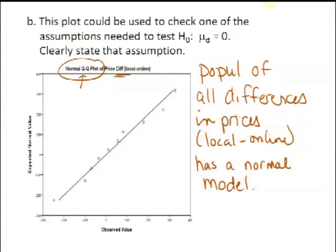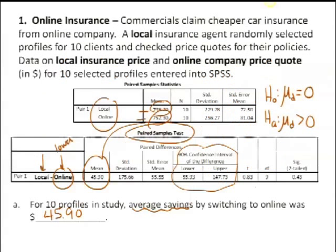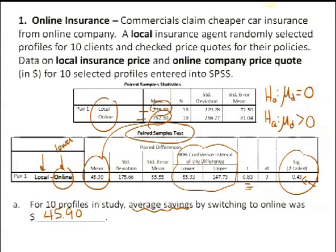You could pull off that t-statistic or do the test here. That p-value of 0.43 would have to be cut in half because we have a one-sided test with a positive t. It doesn't look like we have a significant gain going online based on our data.